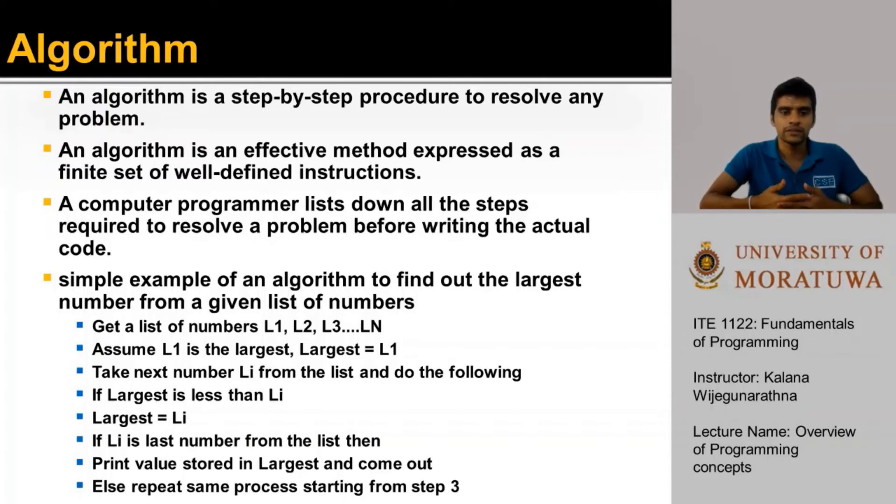First, you get a list of numbers from L1, L2 to N, the number of items in the list, and then assume L1 is the largest number, largest equals L1. Take the next number from the list, and then do the following. If largest is less than L1, then largest equals that particular element. And if that particular element is the last element of the list, then print value stored in the largest as the largest element in the list. And come out of the process, or repeat the same process starting from step three.